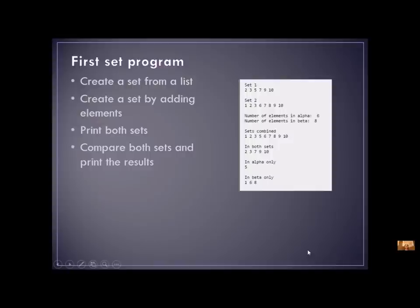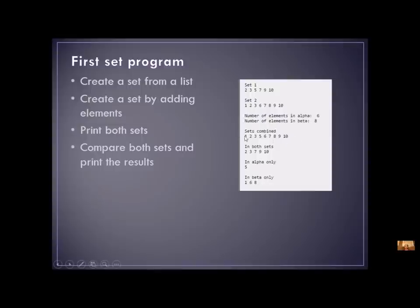To get you started using sets, I'm going to have you create an intro to sets program. You're going to create a set from a list — create a list and then change it to a set using the set function. Create a set just by adding, similar to how you do a list. Print both sets and then compare the sets and print the results. Your output might look something like this. You can print the length, combine the sets, print the intersection, and print the differences. Notice when the sets are combined with union, there are no duplicates — even if both sets had the number one in them, when you do a union, there is just one number one.